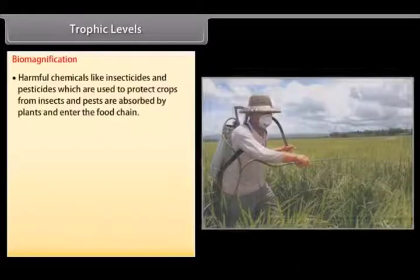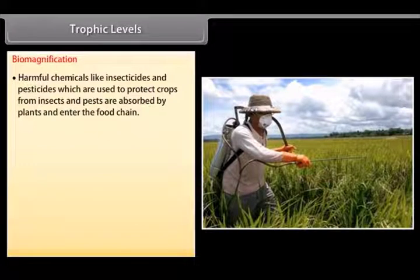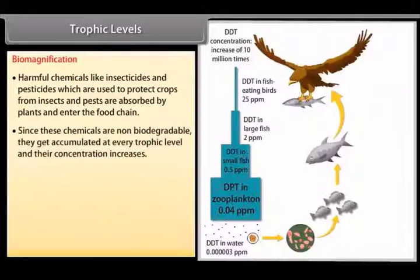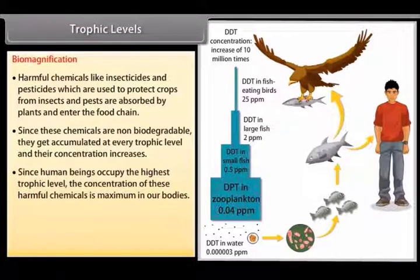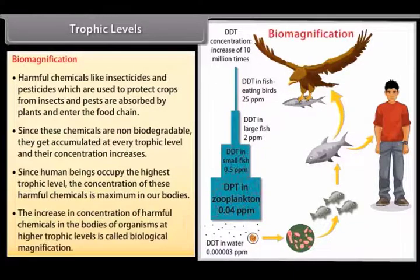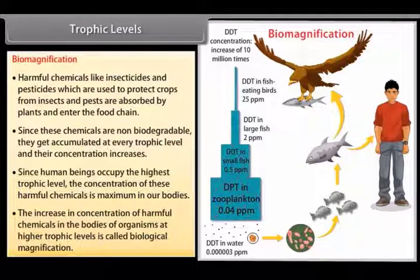Biomagnification: Harmful chemicals like insecticides and pesticides, which are used to protect crops from insects and pests, are absorbed by plants and enter the food chain. Since these chemicals are non-biodegradable, they get accumulated at every trophic level and their concentration increases. Since human beings occupy the highest trophic level, the concentration of these harmful chemicals is maximum in our bodies. The increase in concentration of harmful chemicals in the bodies of organisms at higher trophic levels is called biological magnification.